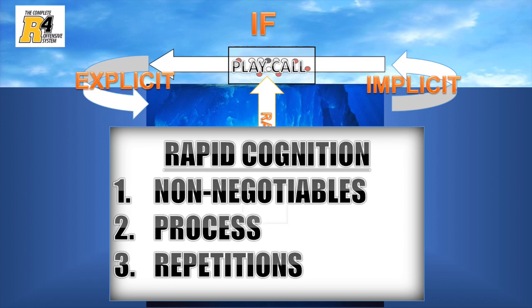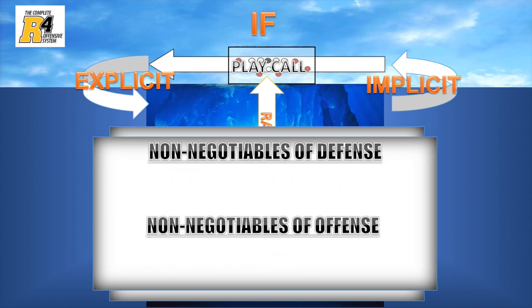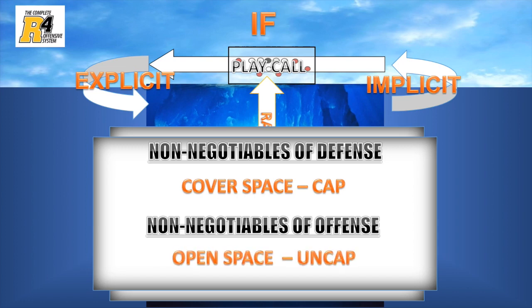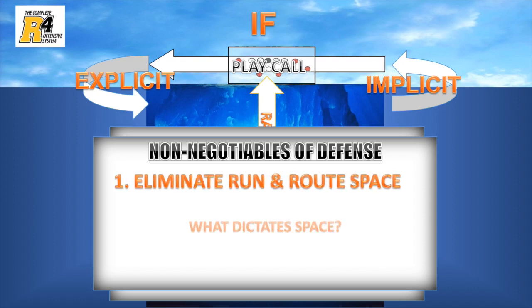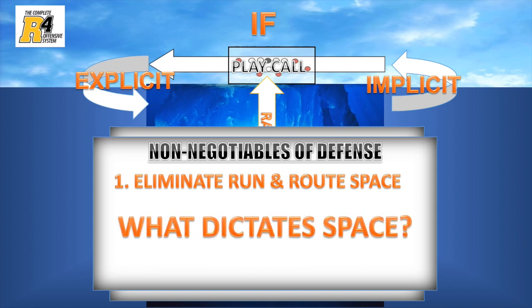Now it's your turn to get the same competitive advantage for your entire offense. So let's begin with the non-negotiables. The non-negotiable of defense is to cover space — or in R4 terms, to cap space. The non-negotiable for offense is to create space — or in R4 terms, to uncap space. As we take a closer look at the number one non-negotiable of defense, we find that the space they want to eliminate is specific. The defense wants to cap run and route space. In knowing that, we need to ask the question: what dictates space?